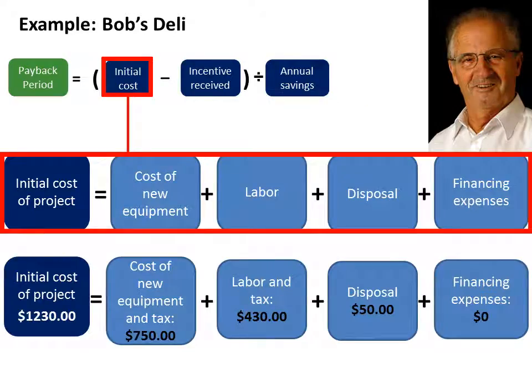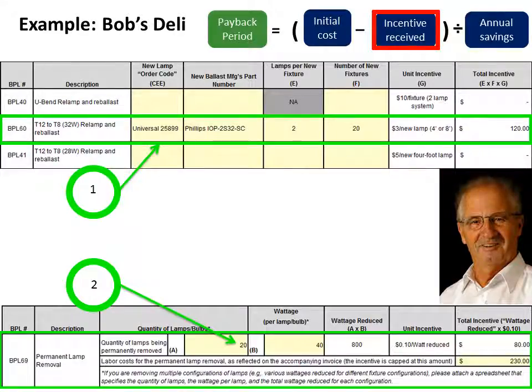To determine the initial cost, Bob adds the cost of equipment, labor cost to remove the old T12 lamps and magnetic ballast, and install the new T8 lamps and electronic ballast, and the cost to dispose of the old equipment. In Bob's case, the initial cost of the project is $1,230. The project guide automatically calculated the total incentive for delamping at $80. Therefore, the total incentive amount Bob will receive in this example is $200.